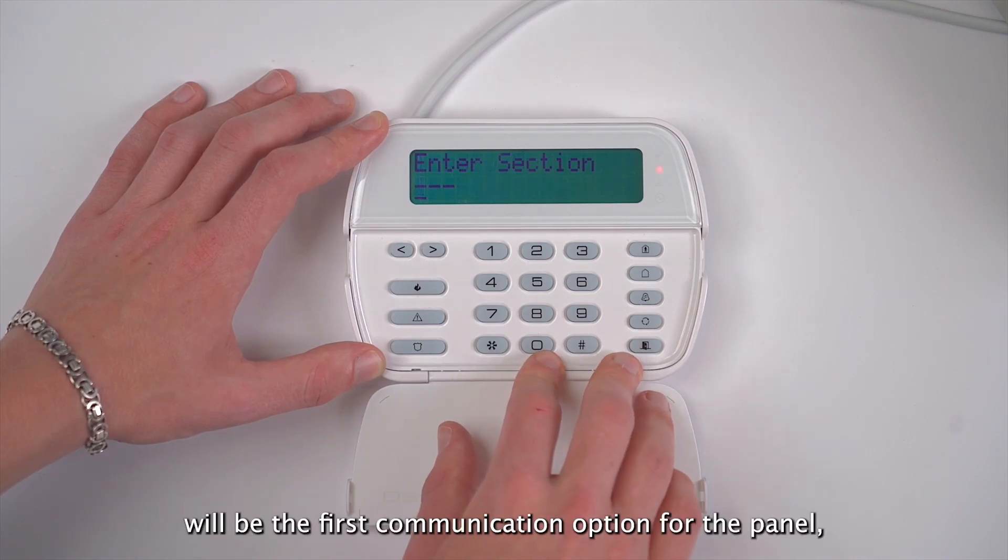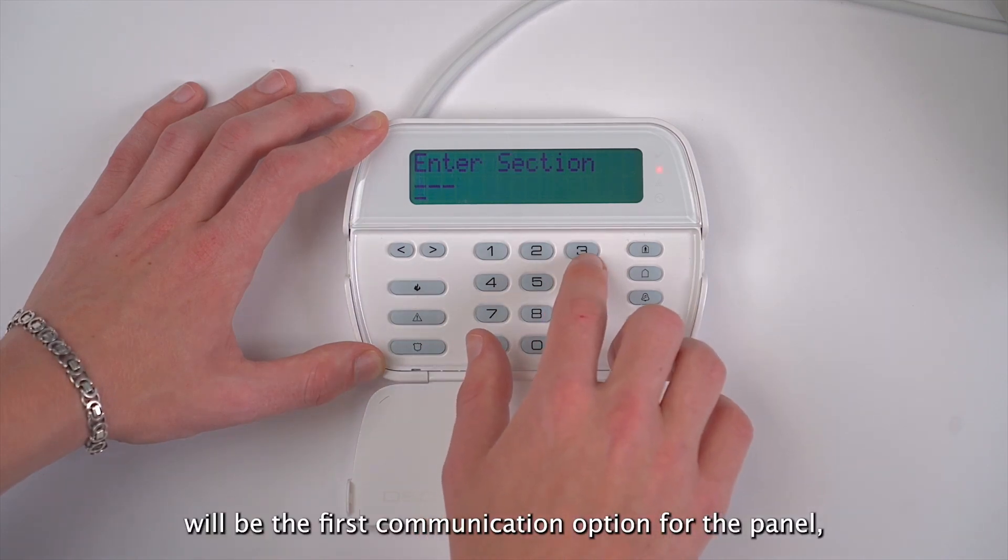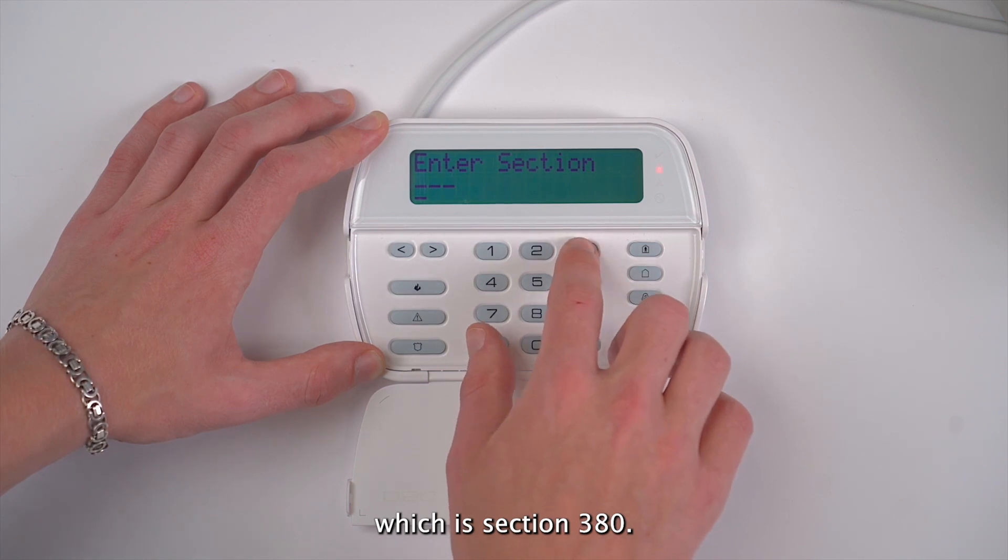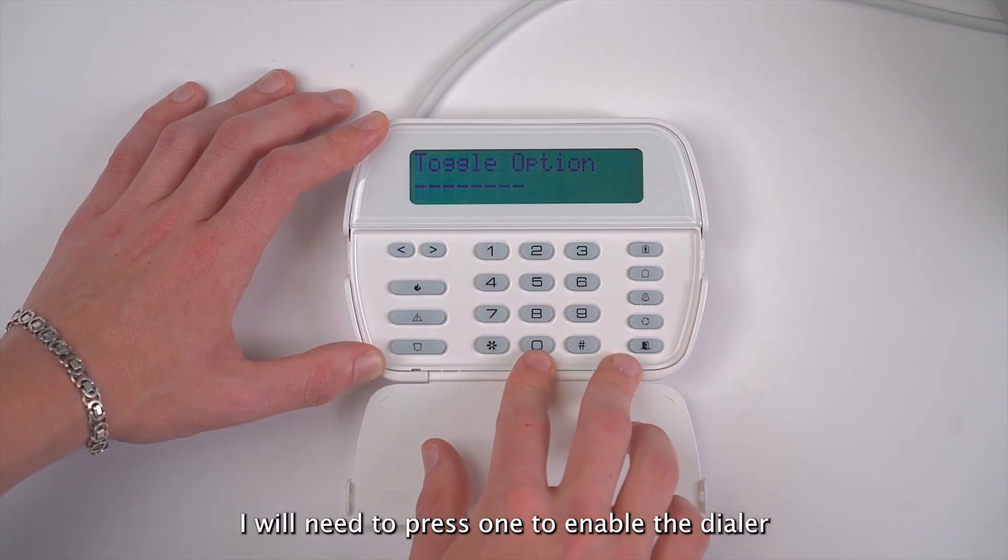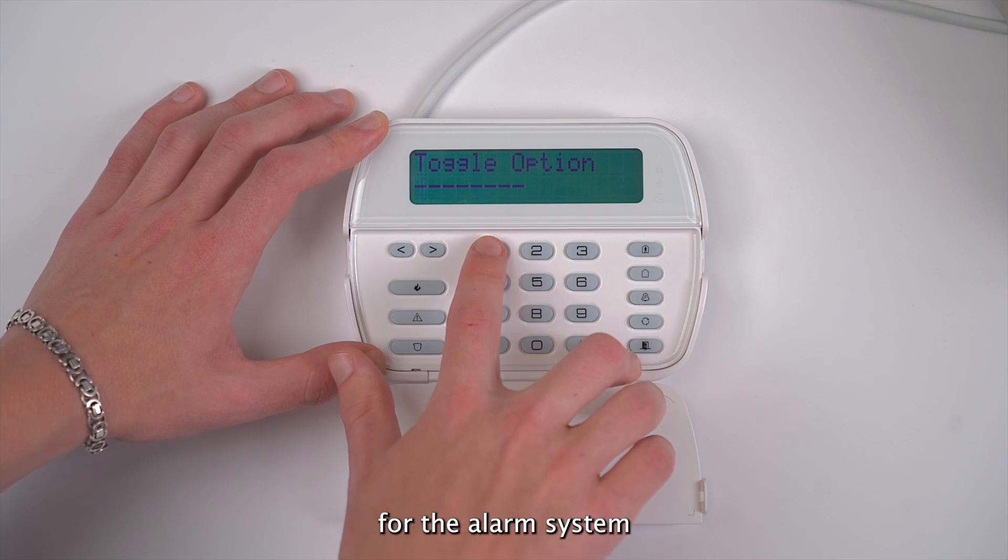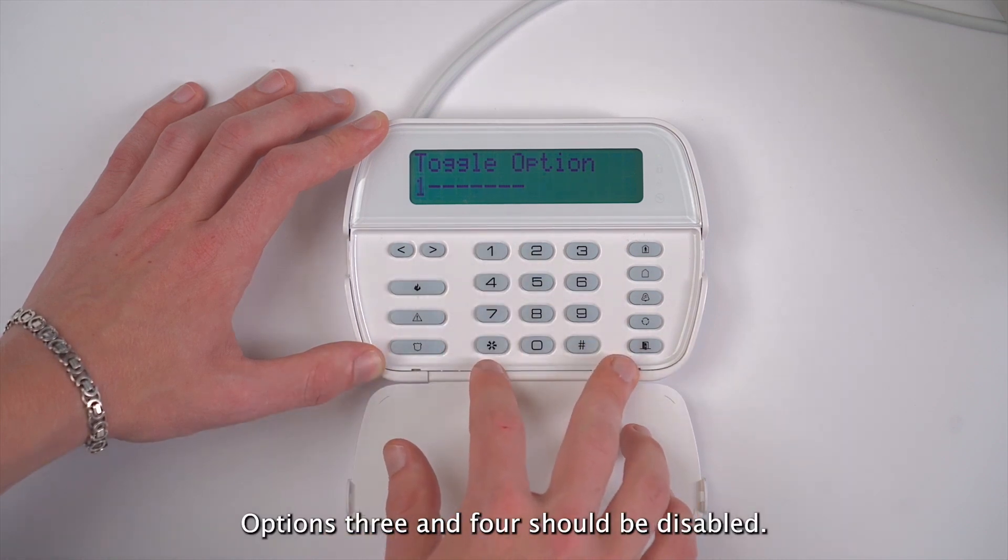The next section will be the first communication option for the panel, which is section 380. I will need to press 1 to enable the dialer for the alarm system. Options 3 and 4 should be disabled.